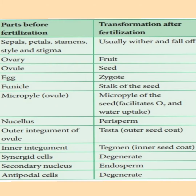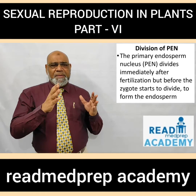The micropyle present in the ovule forms the micropyle of the seed after fertilization, which facilitates oxygen and water uptake. The nucellus present in the ovule forms the perisperm after fertilization. The outer integument forms the outer seed coat called the testa; the inner integument forms the tegmen or inner seed coat. The synergid cells degenerate, the secondary nucleus undergoes triple fusion and forms the endosperm, and the antipodal cells degenerate.